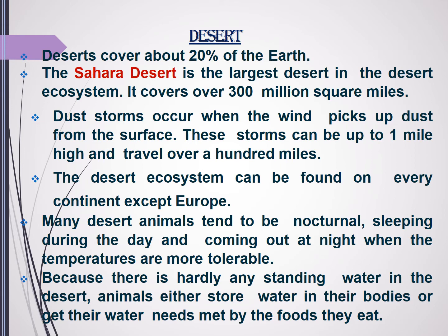Let's move on to the desert ecosystem. It covers about 20% of the earth's landmass. The Sahara Desert is one of the largest deserts, covering 300 million square miles. Storms are common in the desert ecosystem, and it is found on every continent except Europe. Animals that survive in the desert ecosystem are mostly nocturnal — they sleep during the daytime when temperatures are high and come out for hunting at night when temperatures are low. As desert ecosystems have a limited amount of water, animals have made different adaptations in their bodies to store water, or they can obtain water from the food they eat.